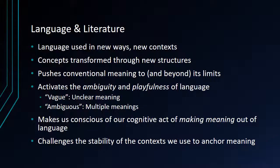It shows us the insufficiency of the language we have, the insufficiency of the concepts we have to understand the world. And it does this by activating the ambiguity and playfulness of language. Ambiguity is a good thing — it's very different from vagueness. To be vague is to have an unclear meaning or no meaning. To be ambiguous is to have multiple meanings that are possible. So language in literature — in good literature at least — is not vague, it's ambiguous. And so it makes us conscious of the cognitive act of making meaning out of language, conscious of the fact that the meaning is not there in the words, but in our activation and negotiation of their meaning. And finally, it challenges the stability of the context we use to anchor meaning.